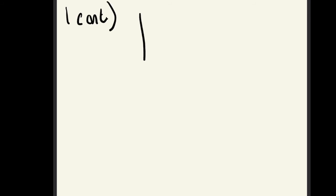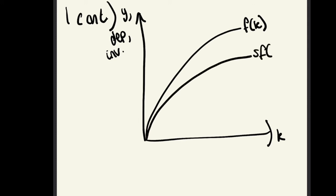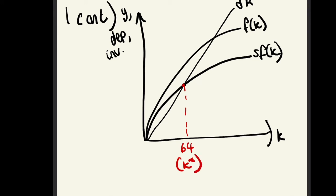We've nearly finished question one — now we just need to illustrate the answer by graphing it. Draw axes with k on the x-axis. We graph f(k) first: it's to a fractional power so it's the concave curve. Then sf(k) is just a graph transformation — the same shape but scaled down. Delta·k is linear since k is to the power of 1. On this graph I mark k star equals 64 at the point where delta·k intersects sf(k), which is the steady-state condition, and draw a line down labelling it k star.